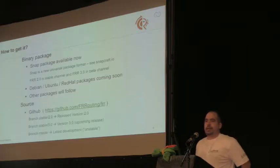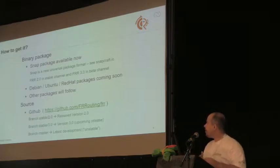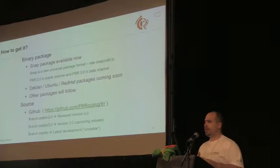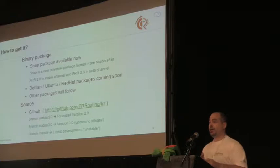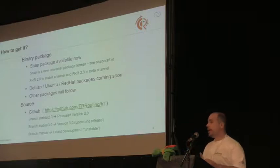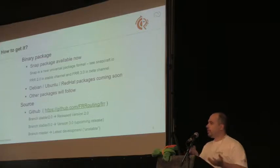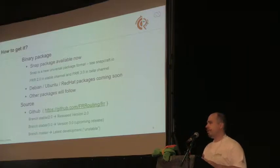Right now the stable release is 2.0. You can get a snap package or packages for several other operating systems — Debian and Ubuntu are ready to download, and Red Hat as well. Other packages will follow. You can also clone the git repository and build it yourself. Version 3.0's first release candidate is available, and the GA for 3.0 is planned for end of this month.